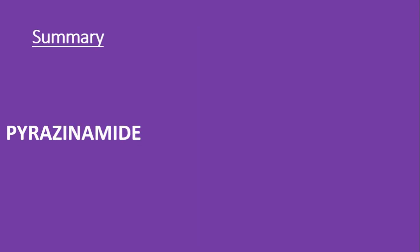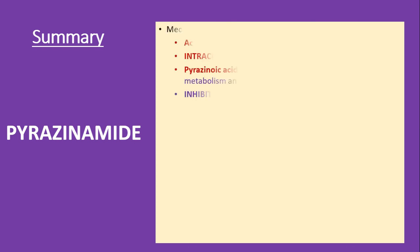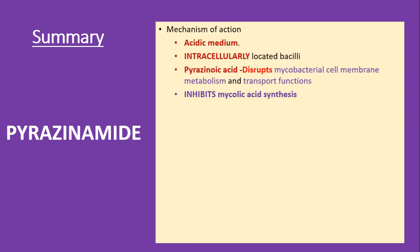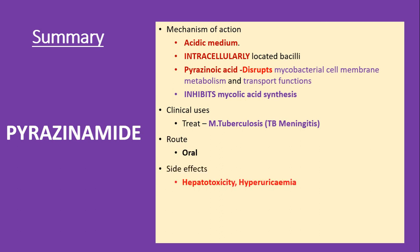In summary, pyrazinamide is very active in the acidic medium and lethal against intracellularly located bacilli. Its active metabolite, pyrazinoic acid, disrupts mycobacterial cell membrane metabolism and transport functions, and inhibits mycolic acid synthesis. Clinically it is used in tuberculosis and tubercular meningitis, administered orally. Side effects include dose-related hepatotoxicity and hyperuricemia. It is contraindicated in pre-existing liver disease.